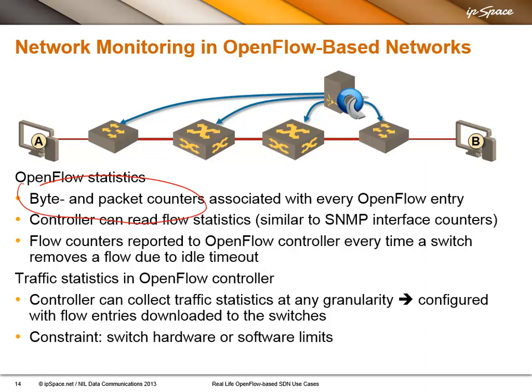For example, you can collect everything on port 80, or collect statistics per MAC address, or collect statistics for individual IP addresses — useful if you want to bill users for data they generate, interesting for mobile networks. You can do anything you wish. The controller simply downloads the proper forwarding entries into the switches, and the switches must support the number of entries needed and support counters on the flow forwarding entries.